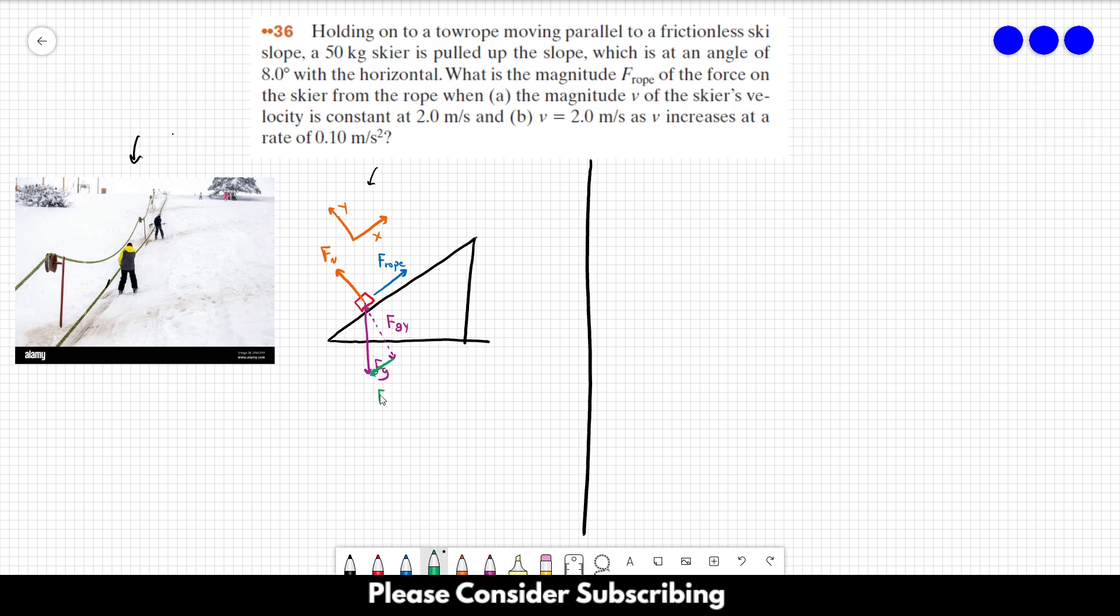Which is the x component of the force of gravity. This angle here is 8 degrees, and we can conclude that this angle is 8 degrees as well. When we are doing the decomposition of this vector, we can write it like this: fgX is equal to fg times the sine of the angle, and fgY is equal to fg times the cosine of the angle. These are the components of our vector fg.